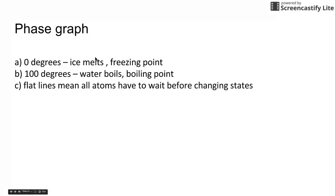So these are just for water. At zero degrees, ice can start to melt, and this is considered the freezing point. This is when ice can start to form and ice can start to melt, and we're in this equilibrium. At 100 degrees, water boils, so this is considered the boiling point. And the flat line means all the atoms have to wait before changing states.